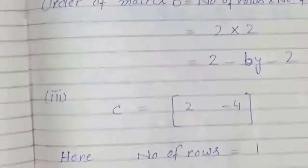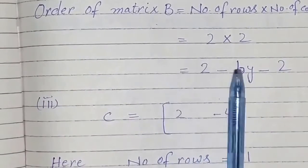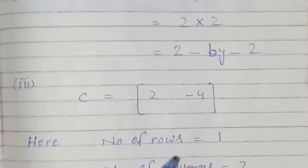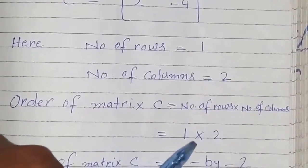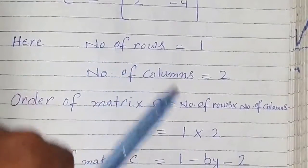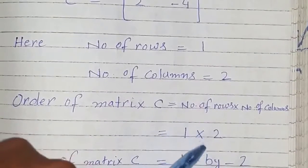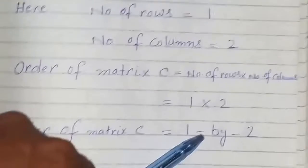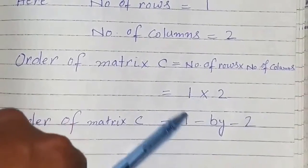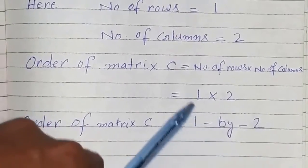Here we have matrix C. It has only one row but 2 columns, so the number of rows is 1 and the number of columns is 2. The order of matrix C is 1 by 2. Remember that we always write the number of rows first, then the number of columns — we don't actually multiply, we just write it as 1 by 2.